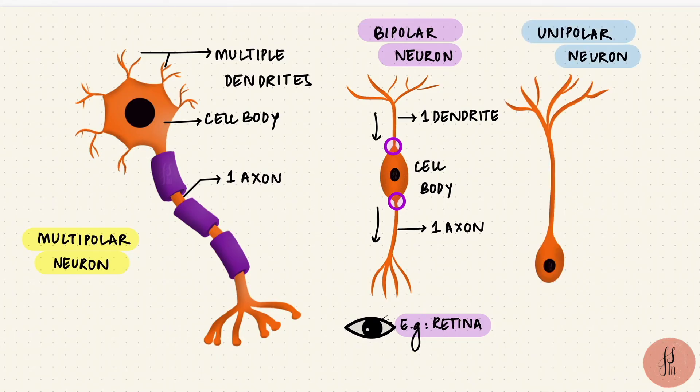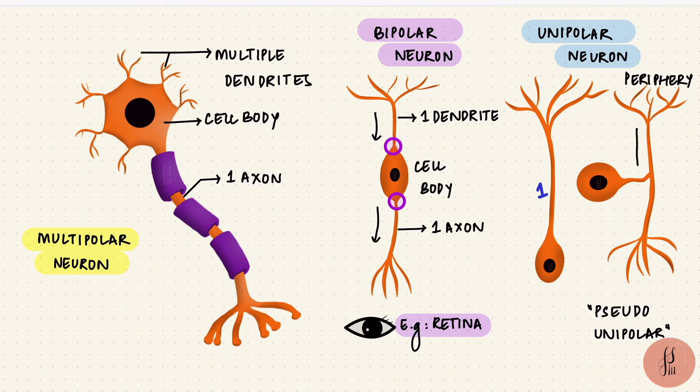Unipolar neurons have just one neuritic process, and they're actually seen in invertebrates. Humans, on the other hand, have what used to be called pseudo-unipolar neurons, though now I think they're just called unipolar neurons. Embryologically, they are bipolar, but the neuritic process extends and then splits into two. So technically it's just one pole. One side extends towards the peripheral organ, bringing information towards the cell body, and the other extends towards the CNS, carrying information away from the cell body.